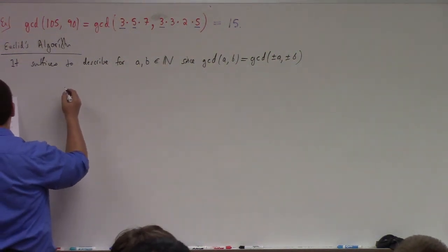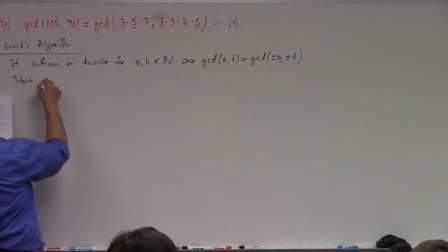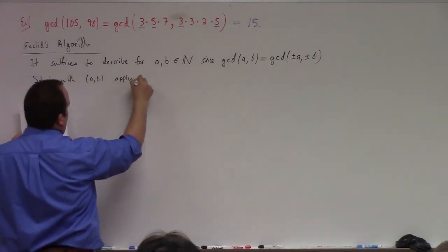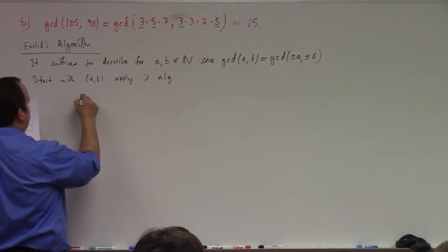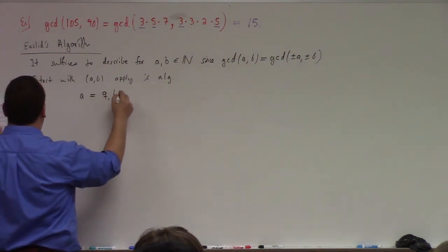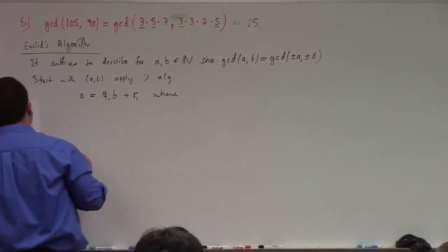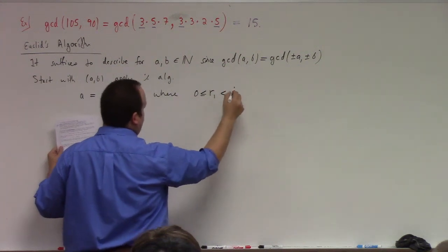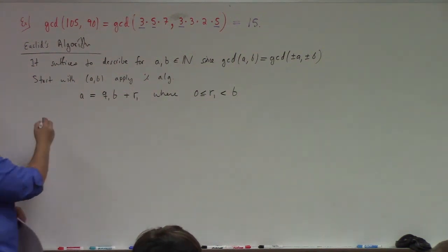So we start with a and b. We apply the division algorithm, which gives us: a is equal to Q₁ times b plus R₁, where 0 ≤ R₁ < b. If R₁ is equal to zero, that means a is equal to Q₁·b, so what's the greatest common divisor of a and b in this case? B.